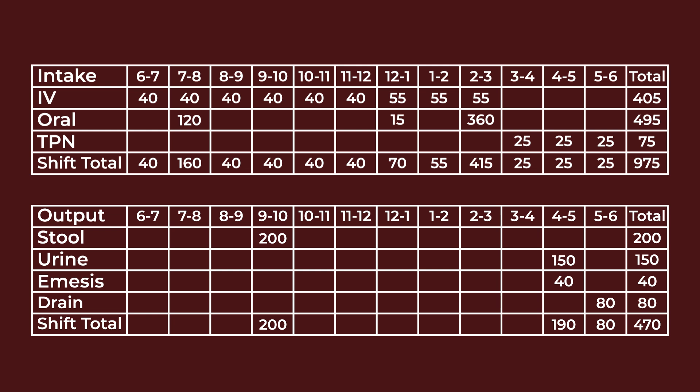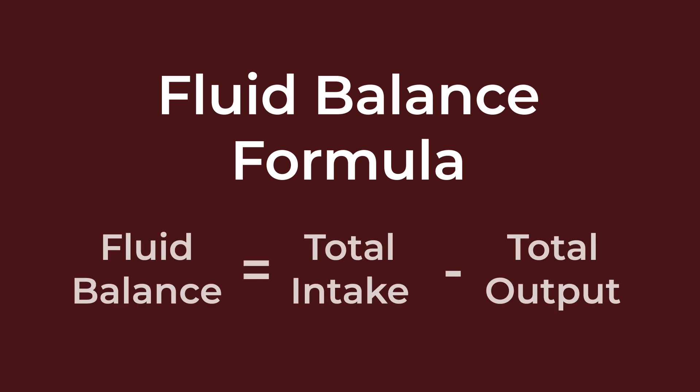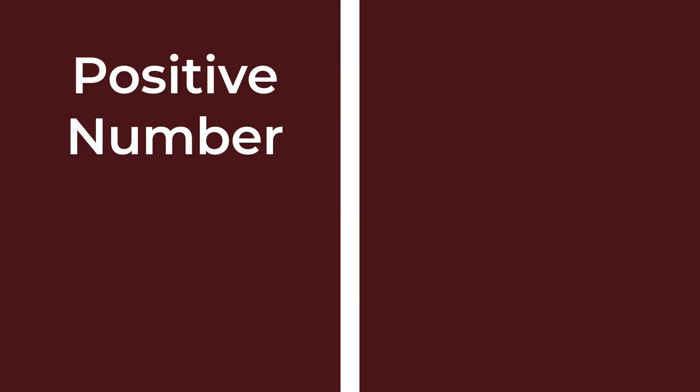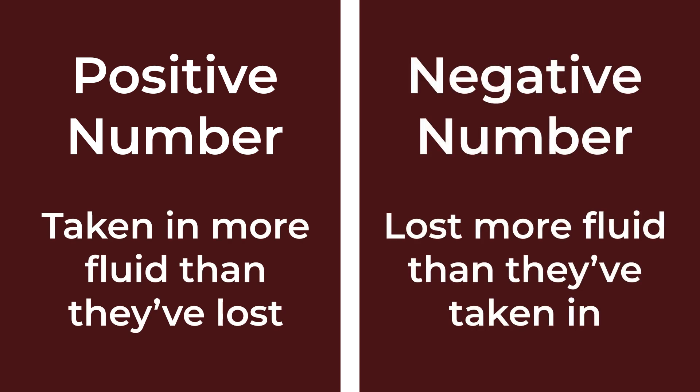Once you have those numbers, you can calculate the fluid balance. Fluid balance is calculated by subtracting the total output from the total intake. The formula looks like this: Fluid balance equals total intake minus total output. If the result is a positive number, the patient has a positive fluid balance, meaning they've taken in more fluid than they've lost. If the result is negative, they've lost more fluid than they've taken in.